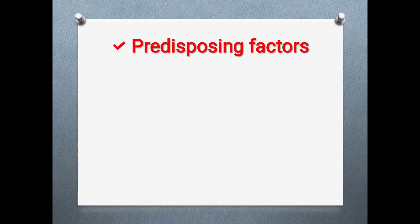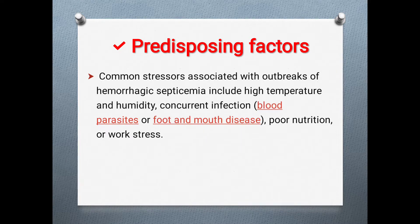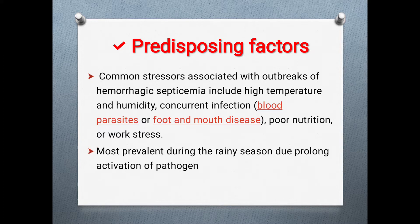Predisposing factors, also known as risk factors, favor this disease. Common stressors associated with outbreaks include high temperature and humidity, concurrent infection with other diseases such as blood parasites or foot-and-mouth disease, lower nutrition, and work stress. This disease is most prevalent during the rainy season due to prolonged activation of the pathogen in a moist environment.